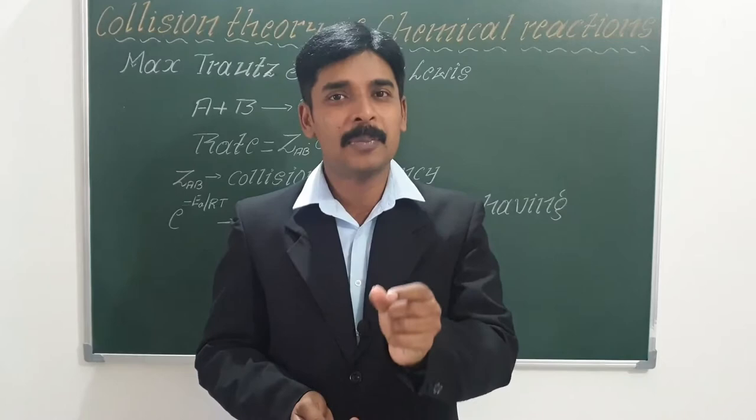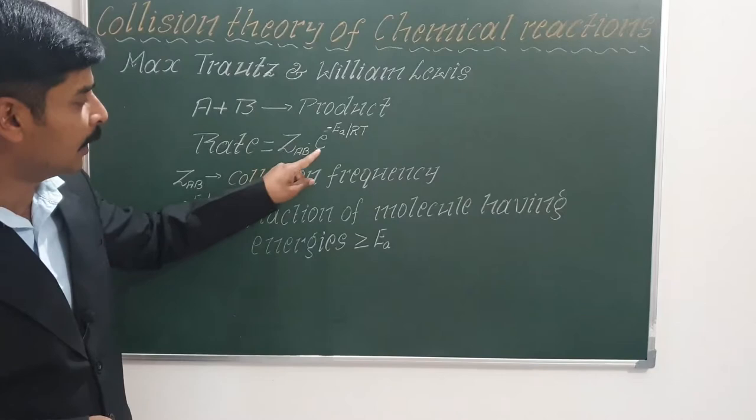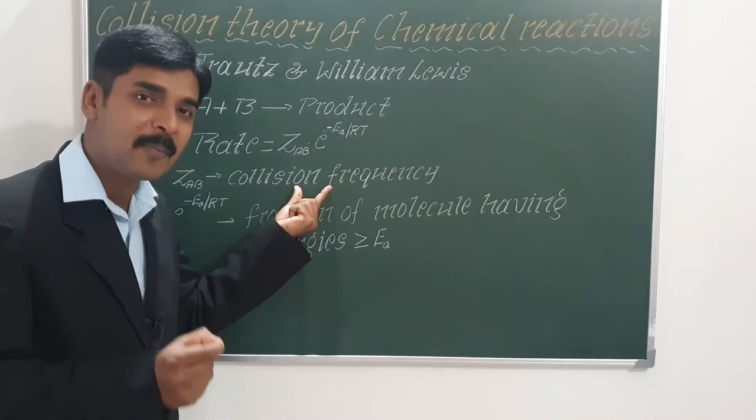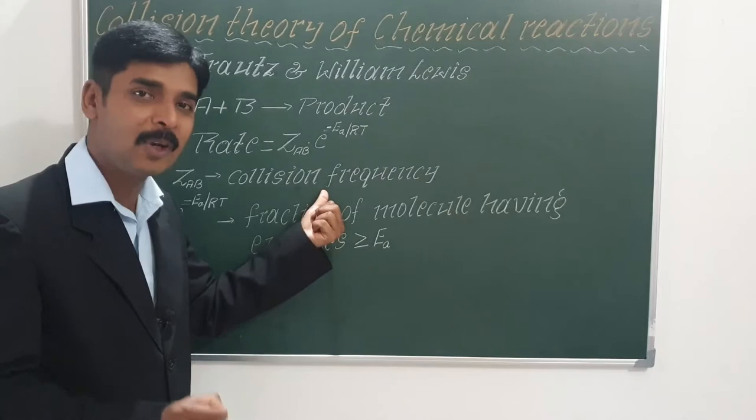Based on this, for a very simple elementary reaction where A plus B gives product, the rate of a reaction can be written as: rate equals ZAB multiplied by e to the power minus Ea by RT, where ZAB is called the collision frequency — the number of collisions per second per unit volume of a reaction mixture.